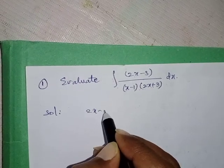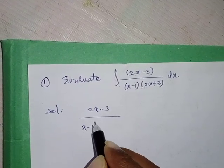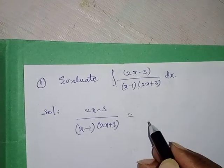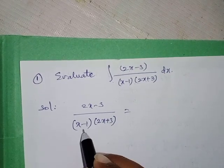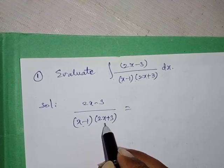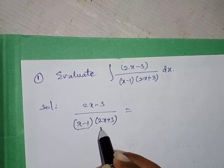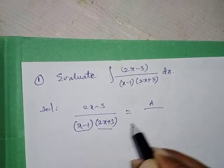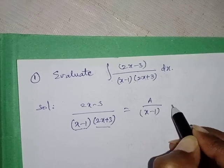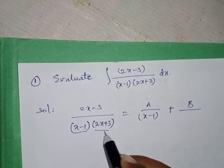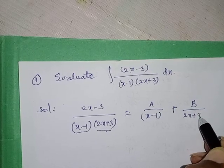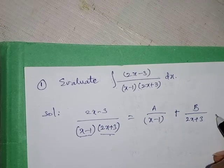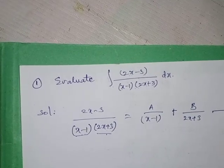So, (2x minus 3) upon (x minus 1)(2x plus 3) equals its partial fraction. The denominator has two factors: x minus 1 and 2x plus 3. So we write it as A upon (x minus 1) plus B upon (2x plus 3). Consider this as equation number 1.